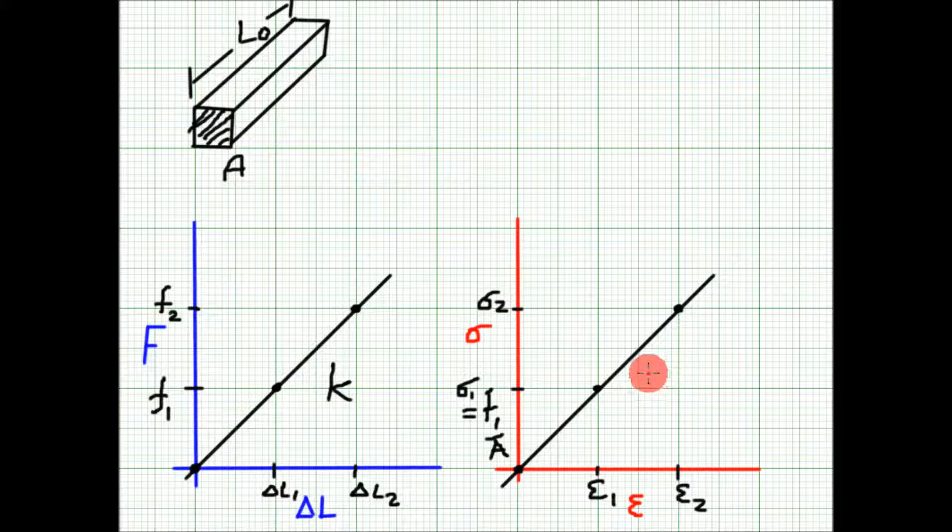The slope of this curve will be the elastic modulus E. What's different from this curve and the force-displacement curve is that the force-displacement curve depends on the particular dimensions of the bar. If you use a longer bar, the changes in length will be different; if you use a shorter bar, it will be different. If you use a bar of different cross-sectional area, this will be different, while stress and strain is intrinsic to the material.